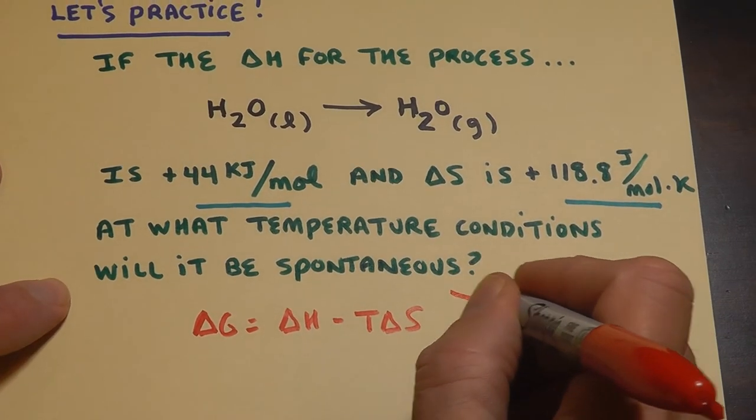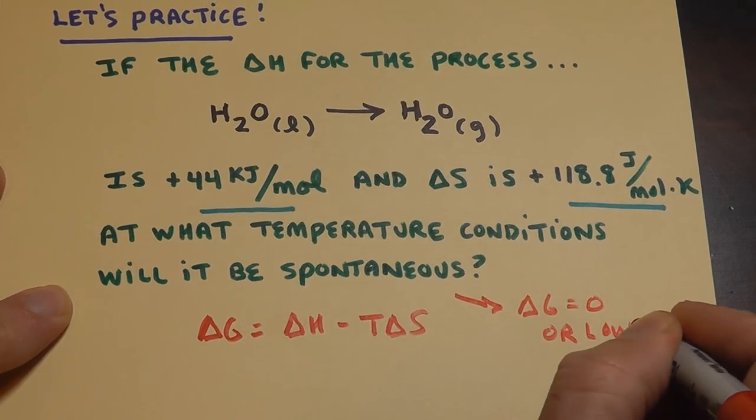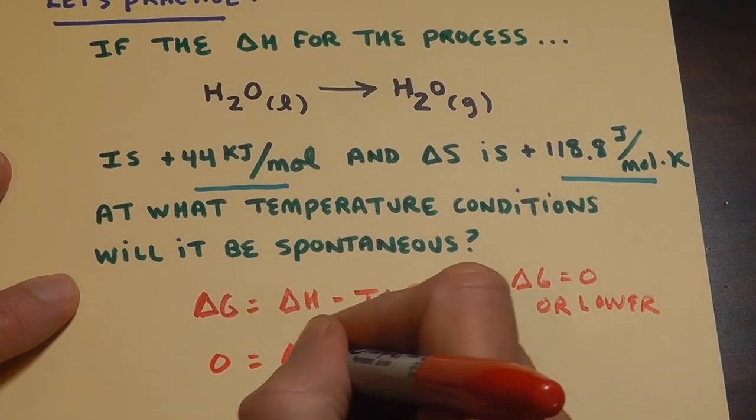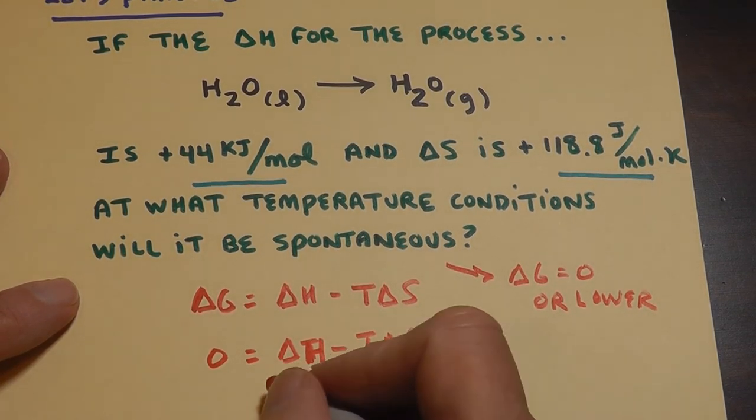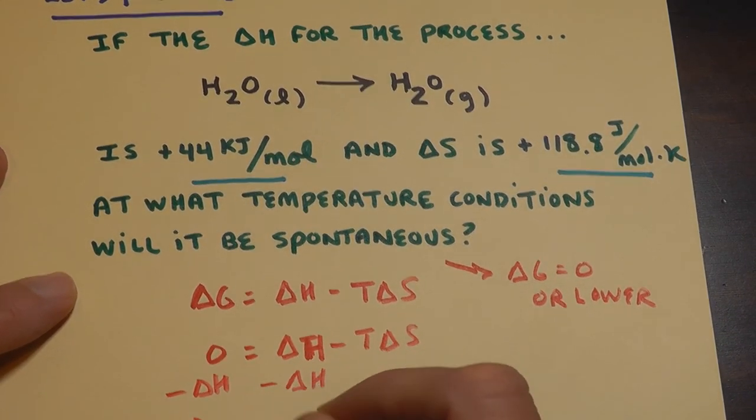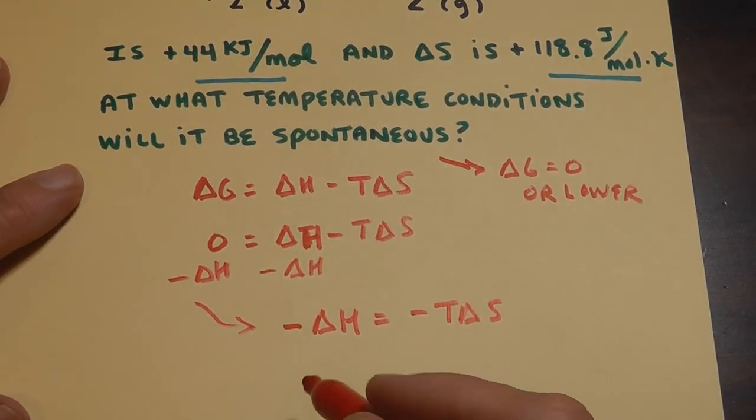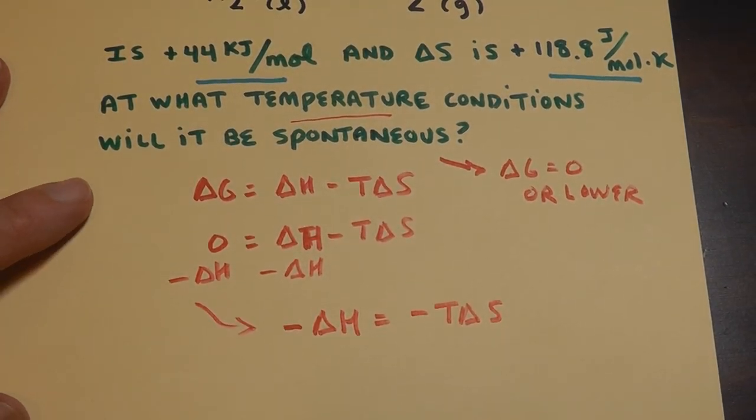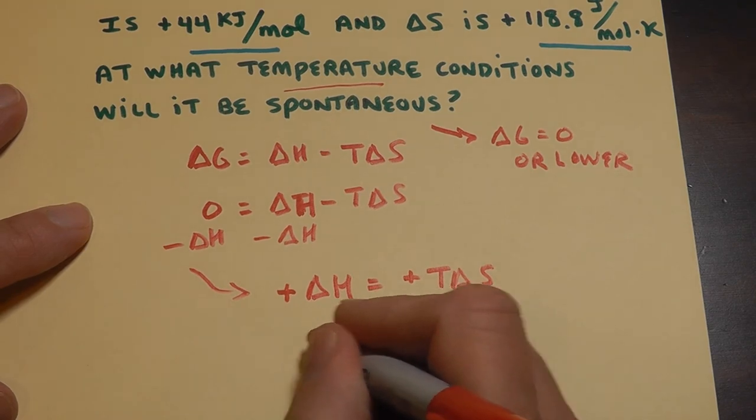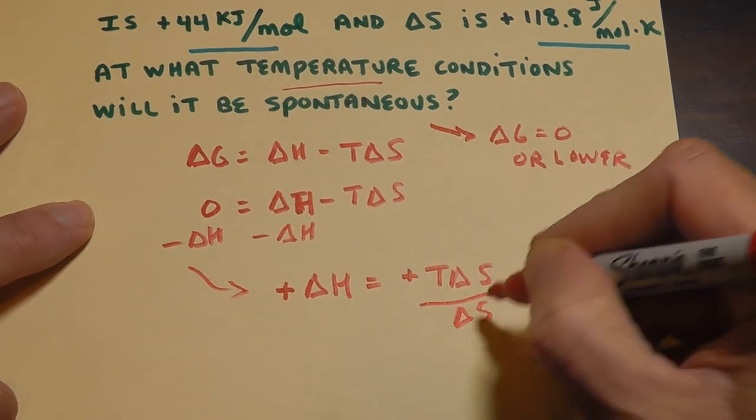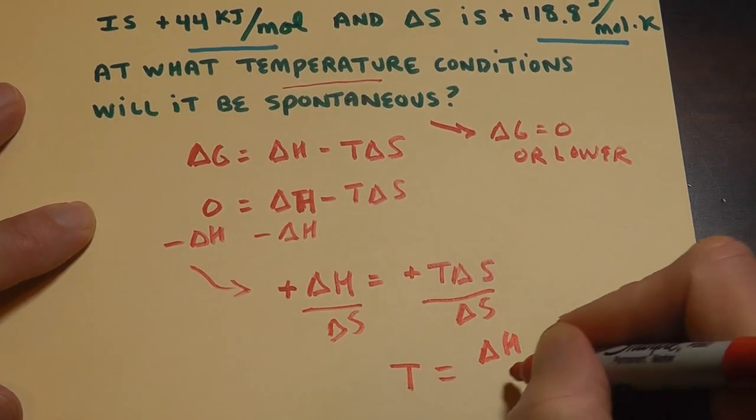When does this become spontaneous? When delta G crosses zero or lower. I'm going to put zero in here. Zero equals delta H minus T delta S. Why don't we subtract from both sides of the equation a delta H? Then minus delta H equals minus T delta S. Solving for T, because they asked about it, they asked what temperature. I'm going to get rid of the negativity. Too much negativity in the world anyhow. I'm going to solve for T. T would be to divide both sides by delta S. So T equals delta H over delta S.